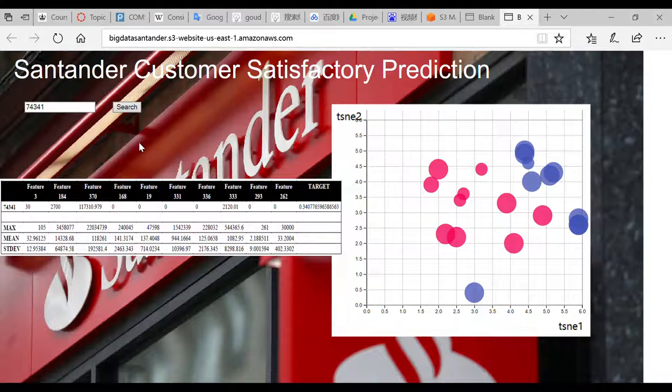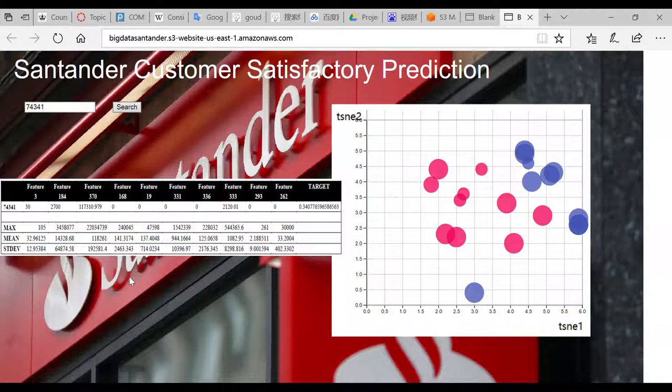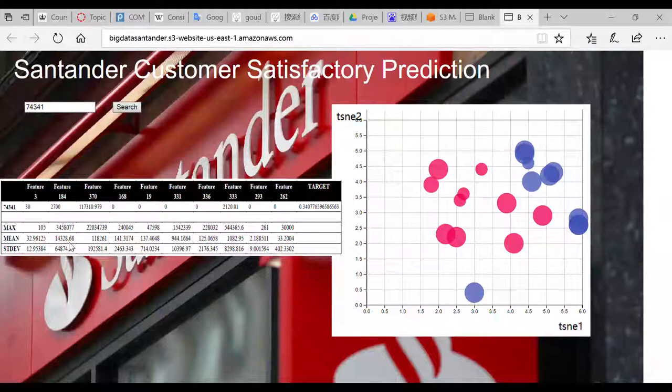We can see that the target value is 0.34, which is relatively smaller than the previous one, which means this one is satisfied. We can also see that the value of feature 184 is much smaller than the mean value. So maybe we can do something to try to improve services and increase the value in the future so that this one will be even more satisfied.